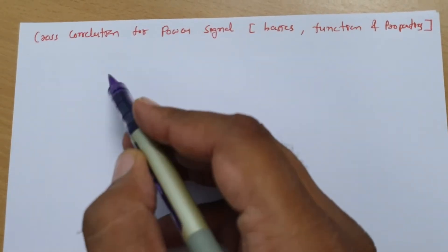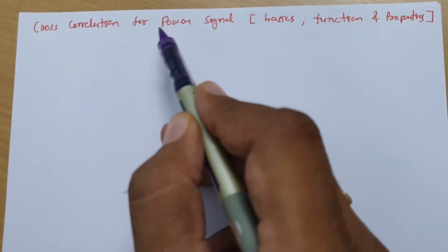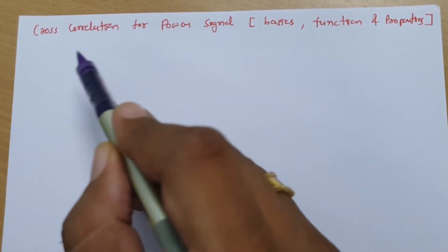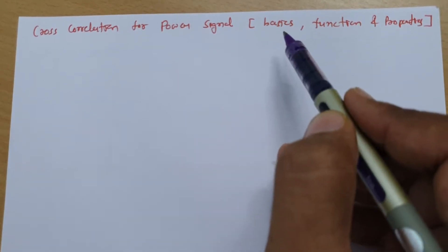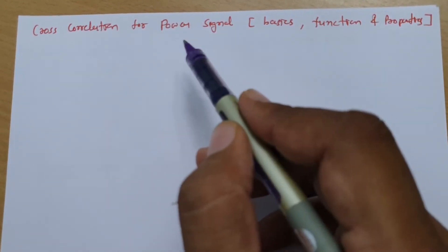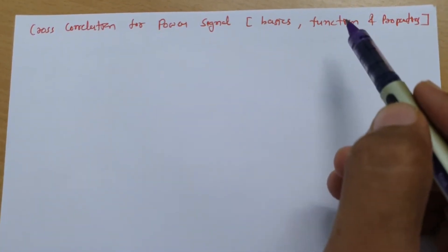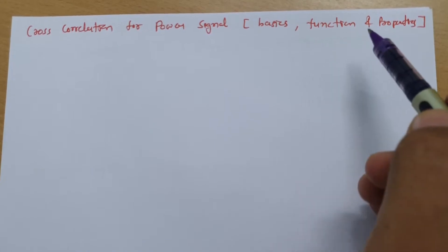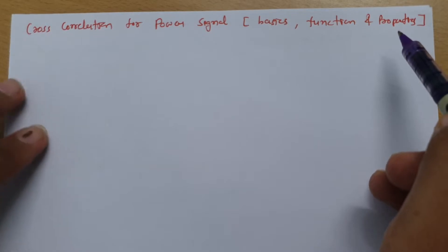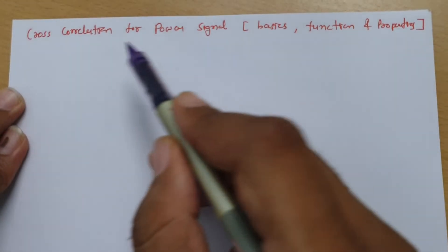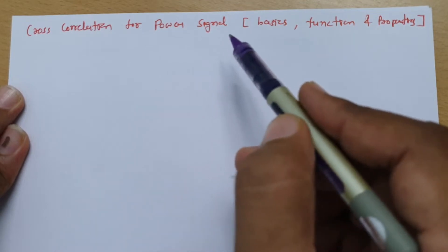Welcome to the signal and system lecture series. In this session, I will explain cross correlation for power signals. I will cover these outlines: basics of cross correlation for power signal, the definition of the cross correlation function for power signal, and at the end, properties of cross correlation for power signal. We have already covered cross correlation for energy signal in my previous session.